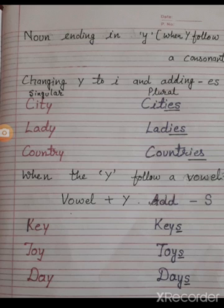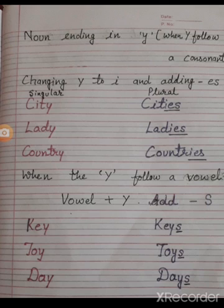Convert singular into plural. City: C-I-T as it is, Y को हटाना है, I को लगाना है, और ES add करना है। Cities: C-I-T-I-E-S. Lady → Ladies. Country → Countries. Simply Y को हटाकर IES add करना है plural form में।